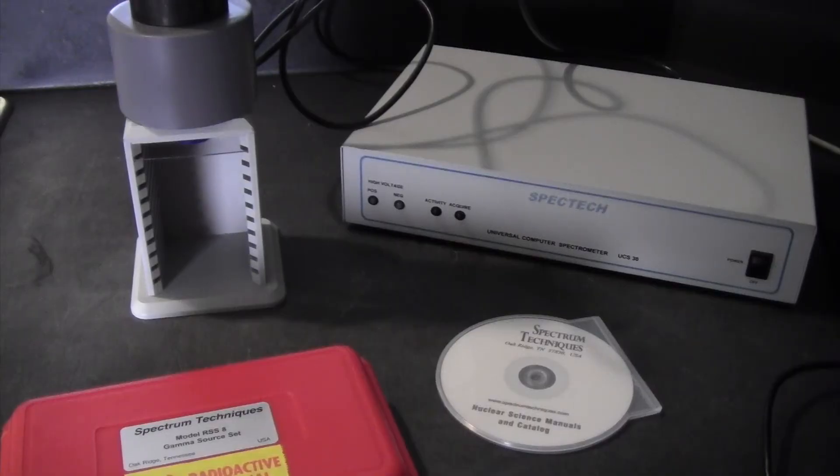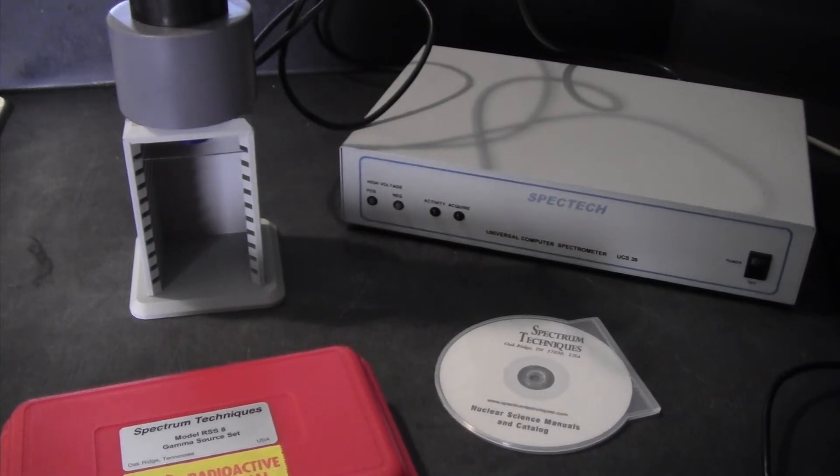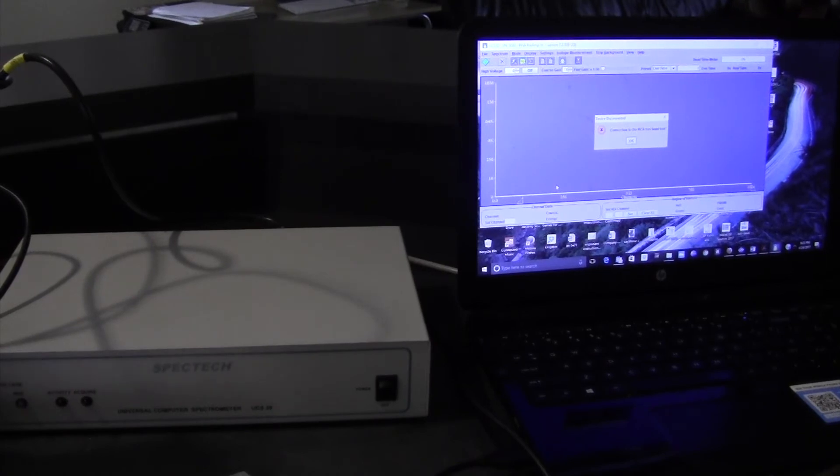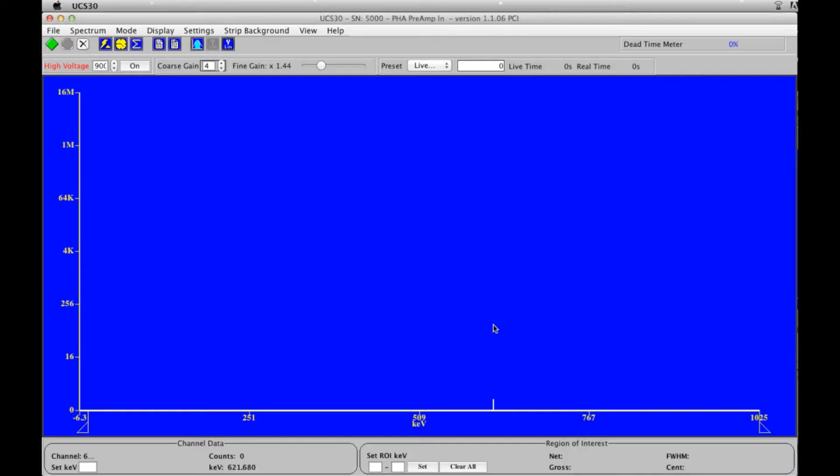Then you connect the USB cable to the computer and run the software. We have that going on right now. We will have a look at the software functions. This is a short demonstration of the software that interfaces with the UCS30.